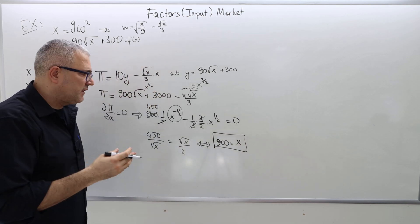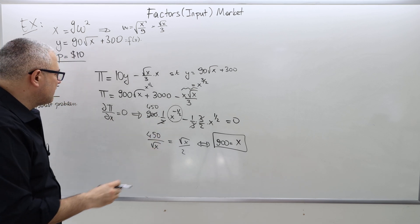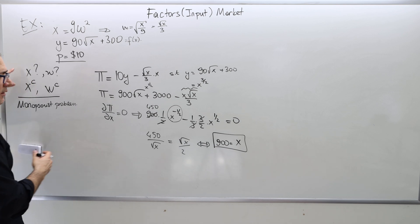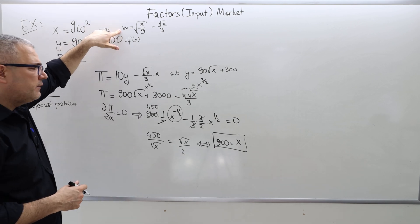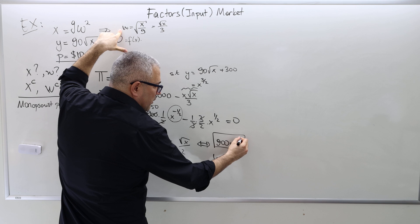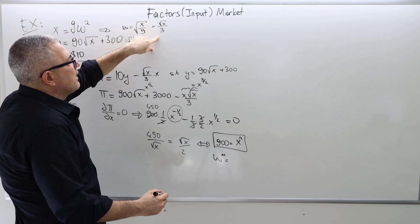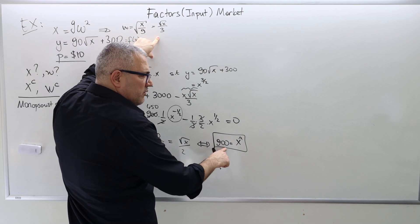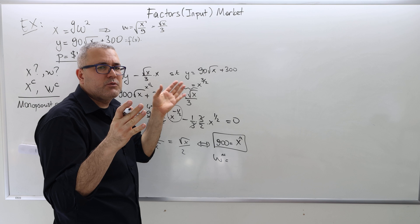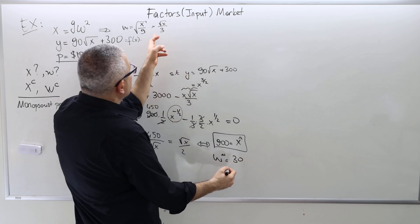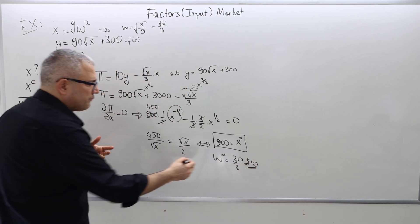The monopsonist hires 900 workers — that's the answer to Part A. For the wage in Part B, use the inverse supply curve: W monopsonist equals the square root of X divided by 3 equals the square root of 900 divided by 3. The square root of 900 is 30 — since 900 equals 9 times 100, square root of 9 is 3, square root of 100 is 10, so 3 times 10 is 30. Therefore W equals 30 divided by 3, which is $10 per worker.